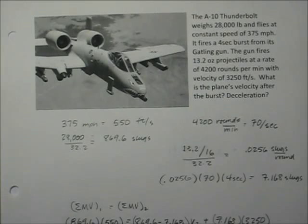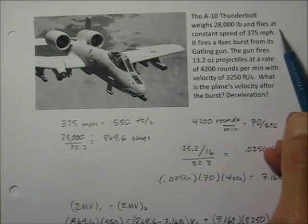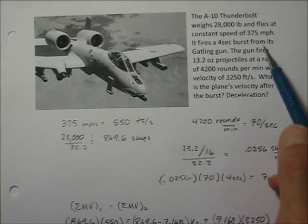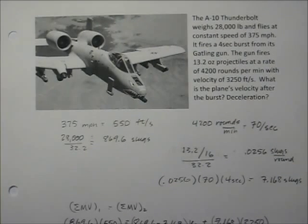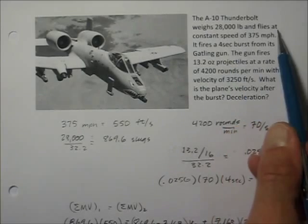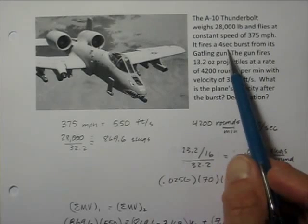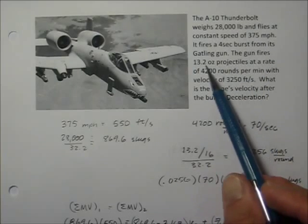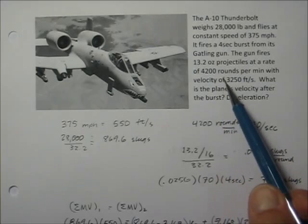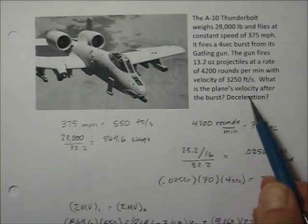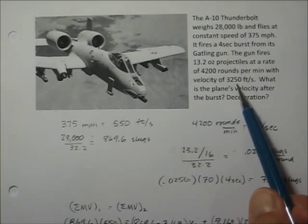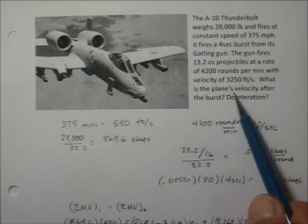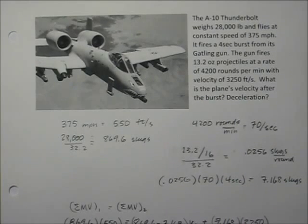The next problem involves an Army A-10 aircraft that weighs 28,000 pounds flying at a constant speed of 375 miles per hour. It fires a four-second burst from its Gatling gun. The gun fires 13.2-ounce projectiles — nearly a pound, so they're big and heavy — at a rate of 4,200 rounds per minute with a velocity of 3,250 feet per second. We want to find the plane's velocity after that burst and calculate the deceleration.